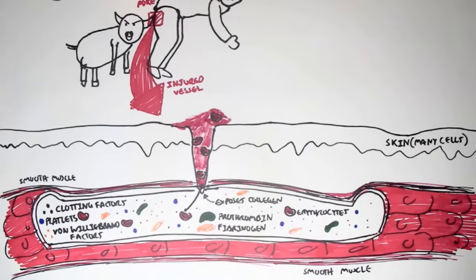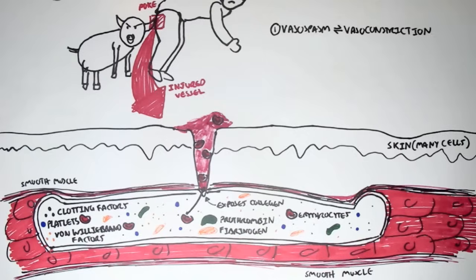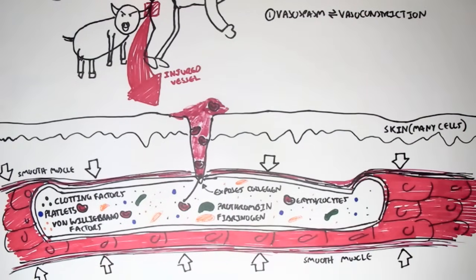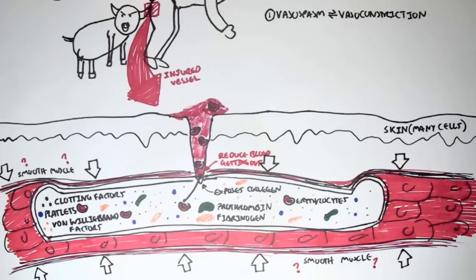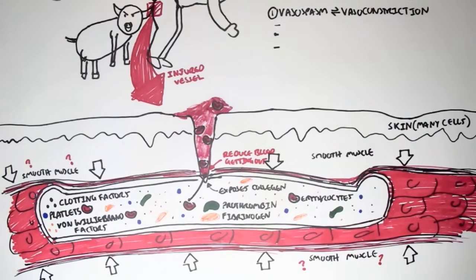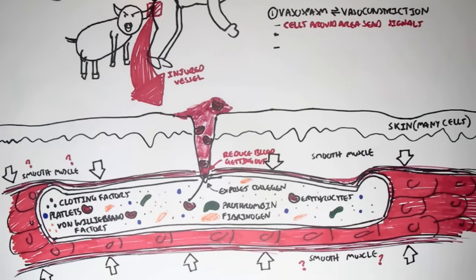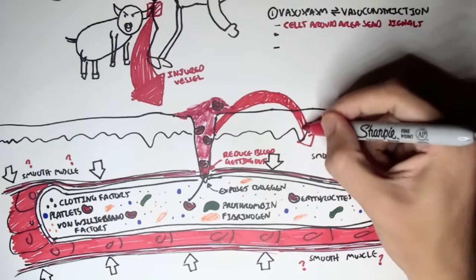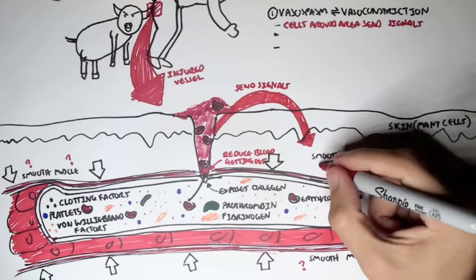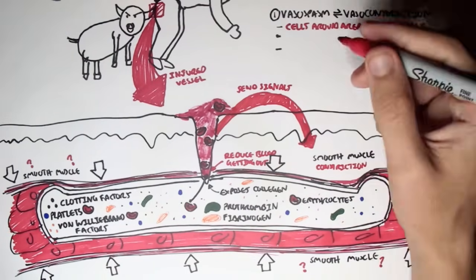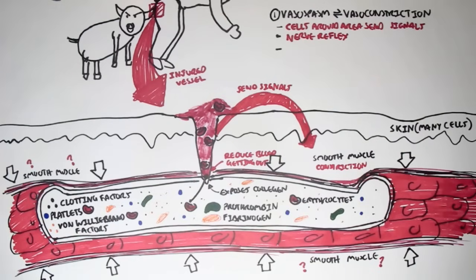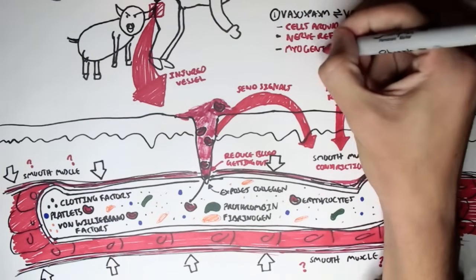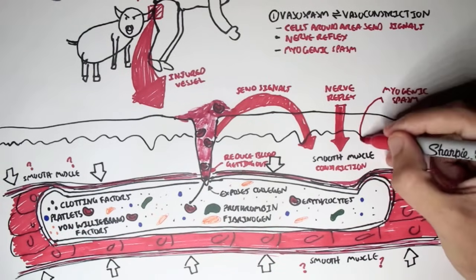So now what first happens in hemostasis is vasospasm, also known as vasoconstriction. The blood vessels have to contract in order to reduce blood from gushing out. But how do the smooth muscles know when to contract? Well, there are three main ways. Firstly, cells around the injured area, particularly the endothelial cells, will begin secreting signals telling the smooth muscles to contract, enhancing vasoconstriction. Then our own nerve reflexes will cause the smooth muscles to contract, further enhancing vasoconstriction. And also we have myogenic spasm, which causes the smooth muscles to contract, and so the blood vessels to contract.